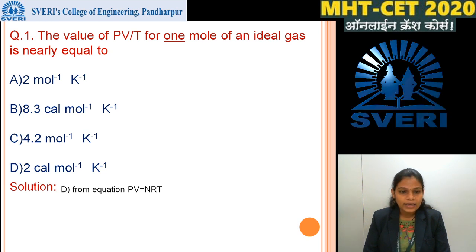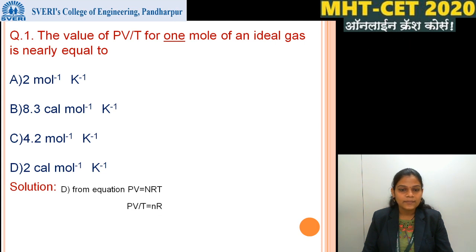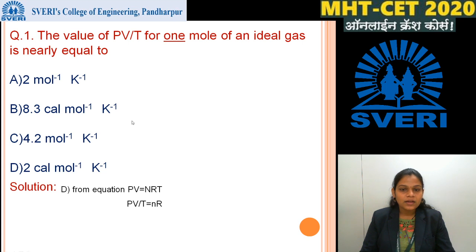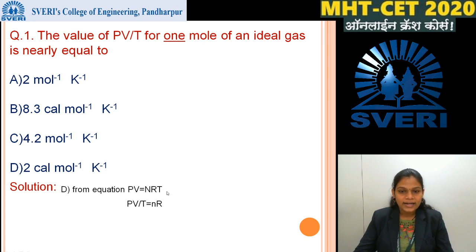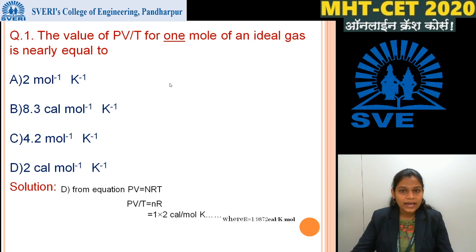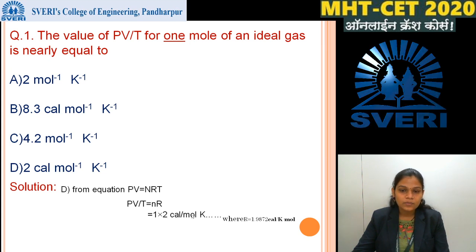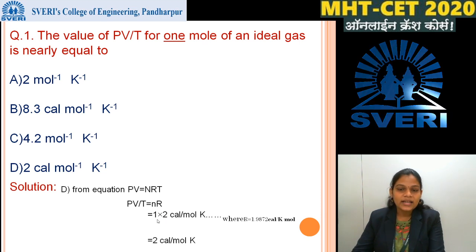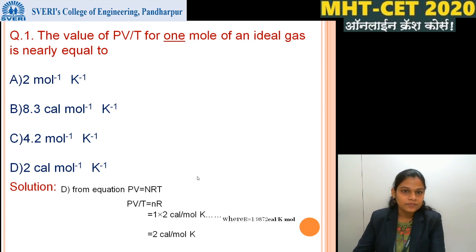From PV = nRT with n = 1, rearranging gives PV/T = nR = 1 × R. Since R is nearly equal to 2 calorie per kelvin per mole, PV/T = 2 calorie per mole per kelvin. Hence the answer is D: 2 calorie per mole per kelvin.